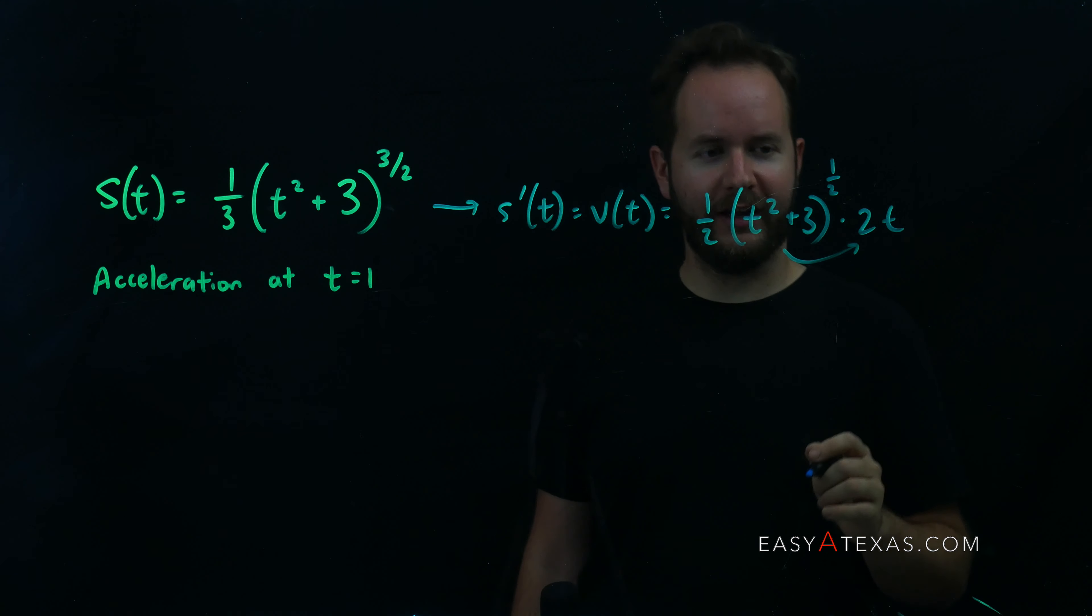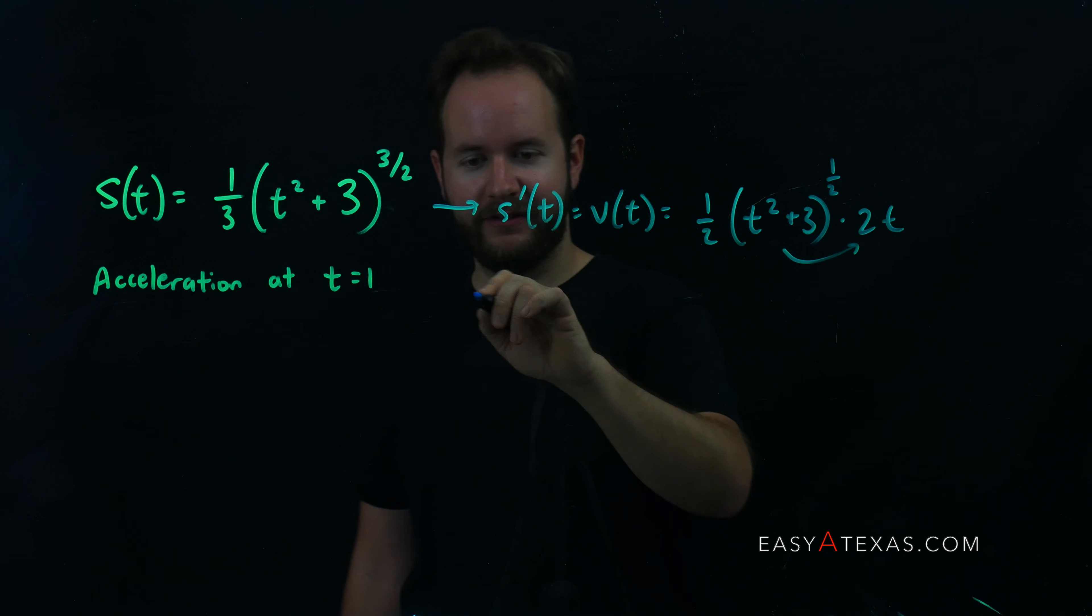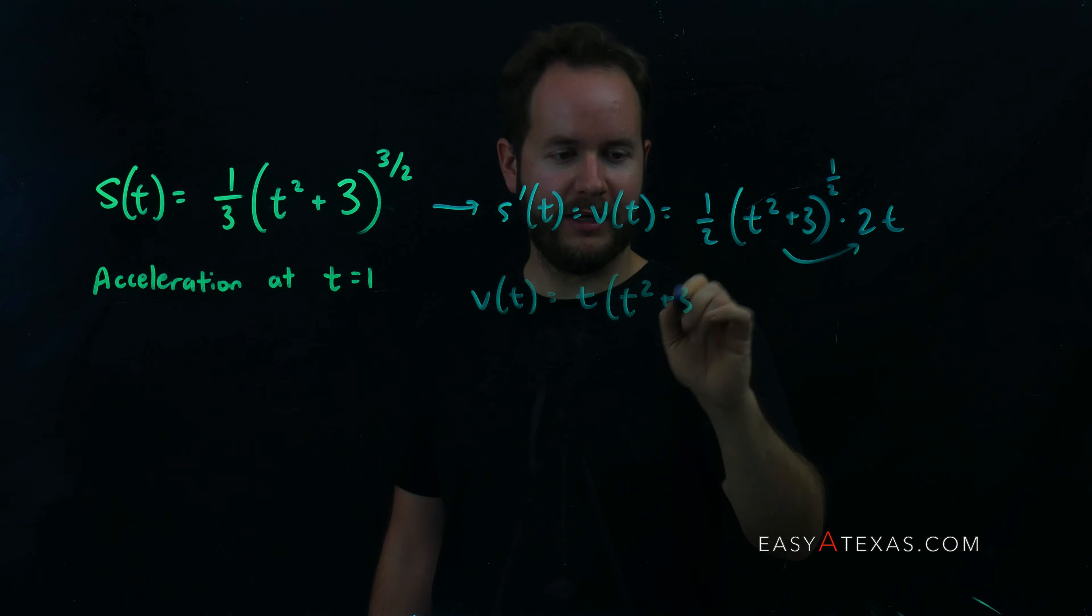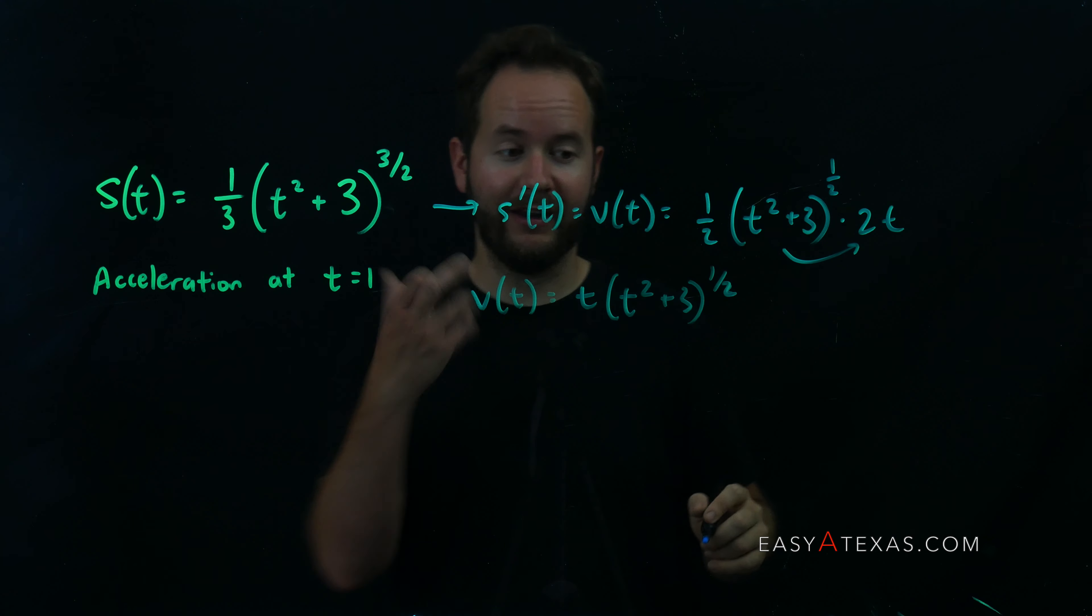I'm going to clean this up a bit before taking the next derivative. Two times one half is just one times t, I'm going to put the t out in front. So we're going to say t times t squared plus three to the one half. Now remember, this is merely our velocity and we're looking for acceleration, so we're going to take one more derivative.